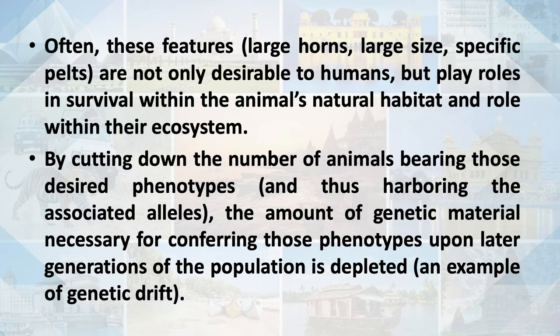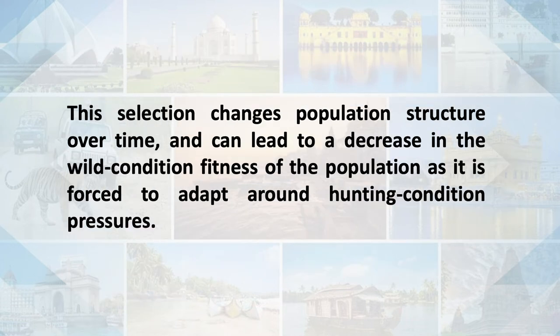By cutting down the number of animals bearing desired phenotypes, the genetic material necessary for conferring those phenotypes upon later generations becomes depleted through genetic drift. This selection changes population structures over time and can lead to a decrease in wild fitness of the population as it is forced to adapt under hunting pressure.